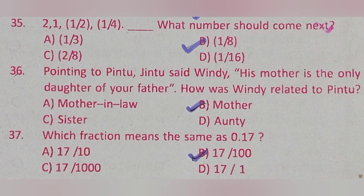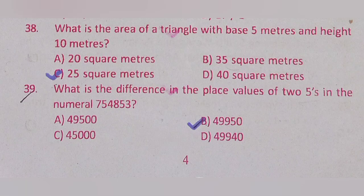Question 37: Which fraction means the same as 0.17? Option A: 17/10, Option B: 17/100, Option C: 17/1000, Option D: 17/1. The correct answer is Option B: 17/100.